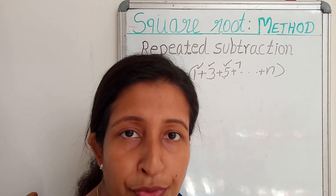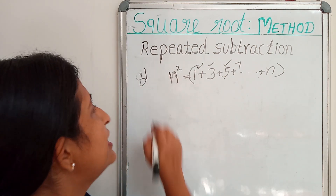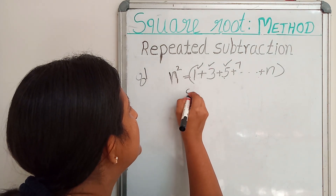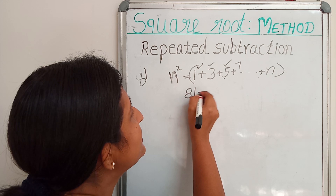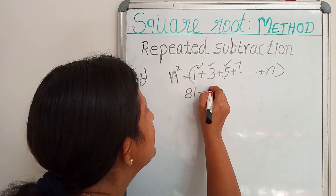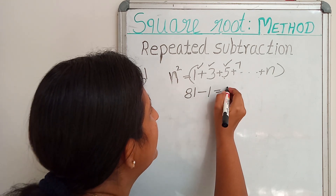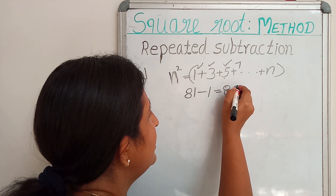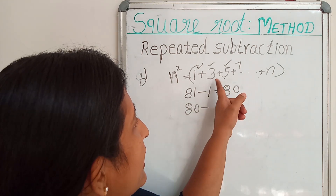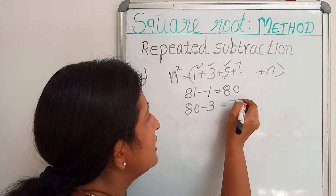Next, we are going to find the square root of 81 using the repeated subtraction method. For that, write down 81 and subtract — take the first odd natural number, that is 1. Subtract 1 from 81, then we will get 80. Then write down 80, and 80 minus the second odd number, that is 3: 80 minus 3 equals 77.